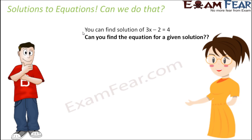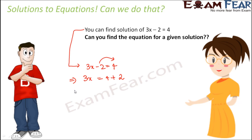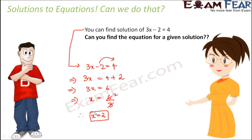So how do you find the solution for 3x minus 2 equals 4? First we move 2 to the right hand side, so this becomes 3x equals 4 plus 2, which gives 3x equals 6. Therefore x equals 6 divided by 3, so x equals 2. That is the solution for this equation.